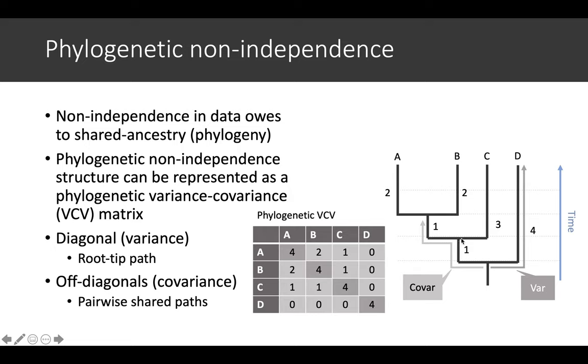So this is basically the structure of this non-independence based on phylogeny that you can represent as a matrix.